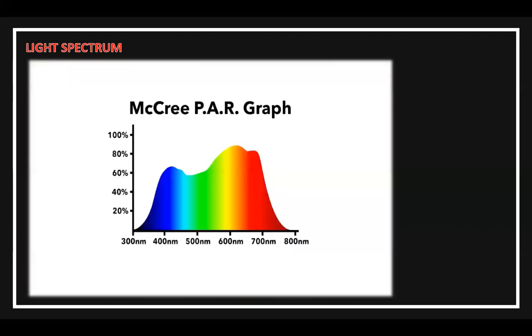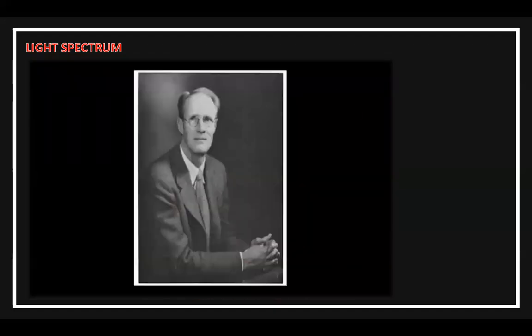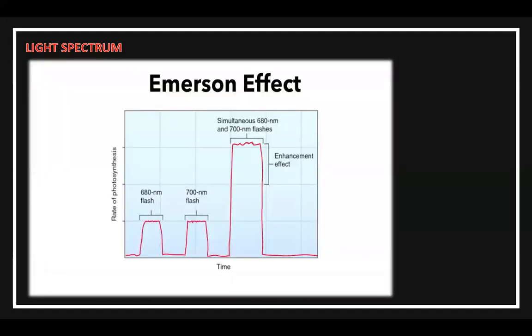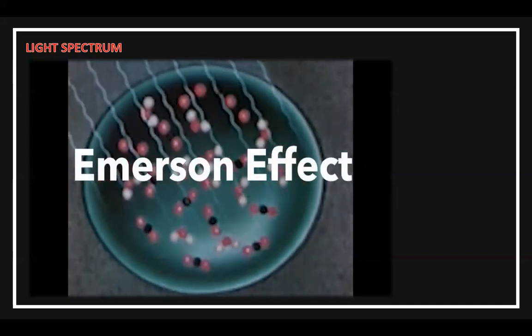So what about infrared light? If we look at this graph, it almost looks like infrared light is unused. But remember, this graph is only counting one color at a time. This is where Dr. Emerson comes into play. Dr. Emerson tested what happens when light was given to a plant two wavelengths at a time — one in the red range and one in the infrared range. What he found was that these two wavelengths together increased photosynthesis. This extra boost of photosynthesis is called the Emerson effect.